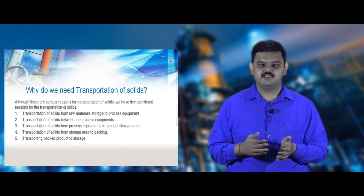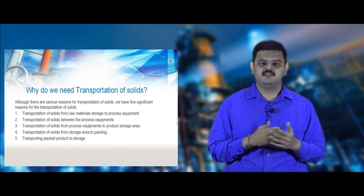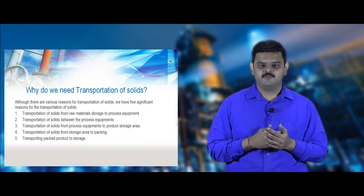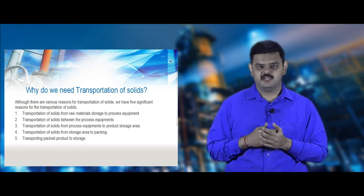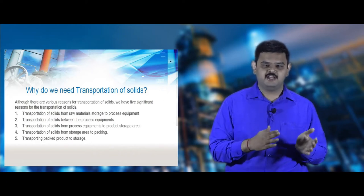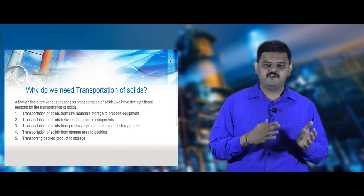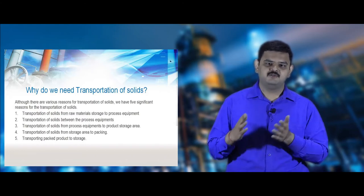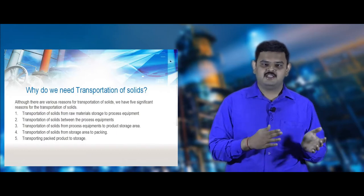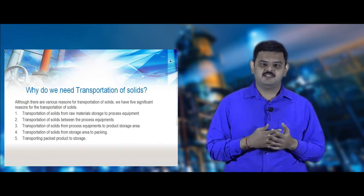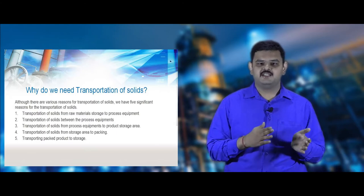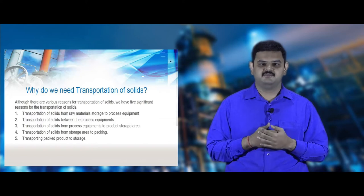After conversion into products, they can be stored in bins or silos, which are the storage areas discussed in the earlier lecture series. From the storage area, products are transferred to the packaging area through the conveying system. After packaging, packaged materials are sent to go-downs using conveying systems — for example, in soap industries where bar soaps are cut, packaged into boxes, and sent to storage.